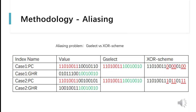This table shows an example of the index aliasing problem caused by the G-select branch predictor. Assuming that PC and GHR are 16 bits, G-select combines the high 8 bits of the PC value with the low 8 bits of GHR to get the new index. The XOR scheme uses the XOR operation between the PC and the index generated by G-select, then combines them to generate the final index. As we can observe from this table, for two cases with different PC and GHR values, index aliasing occurs in the G-select scheme but does not appear in the XOR scheme.